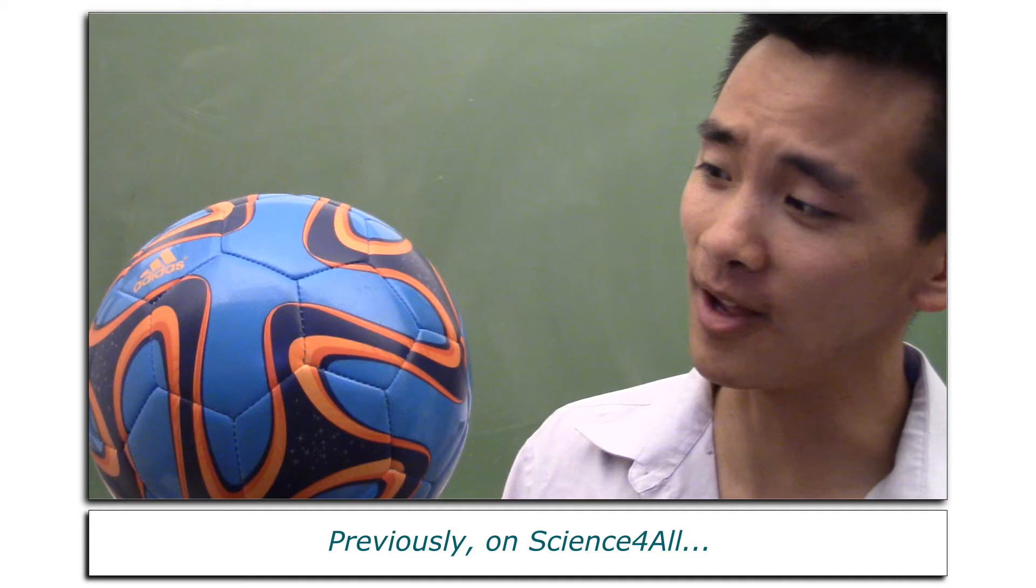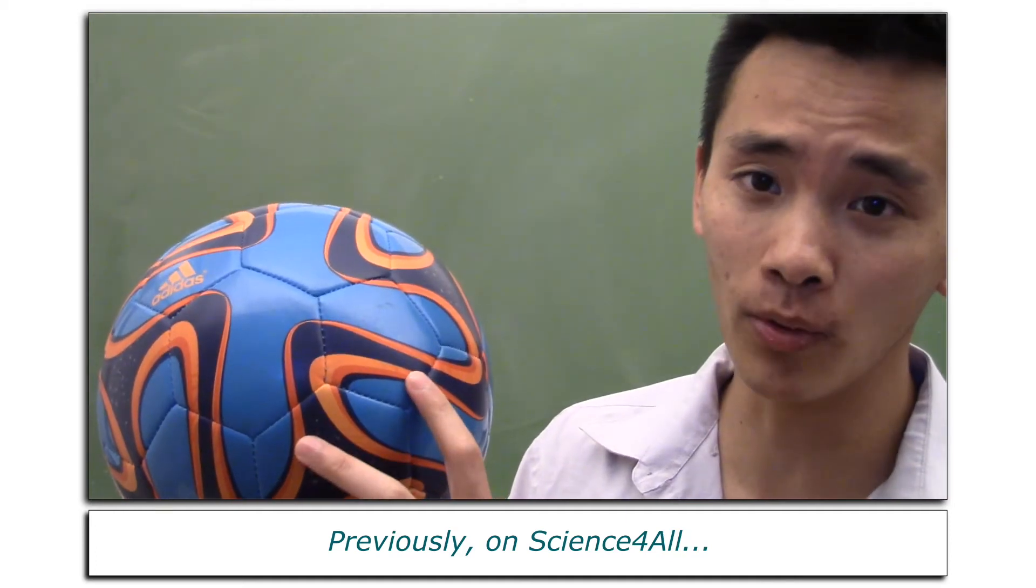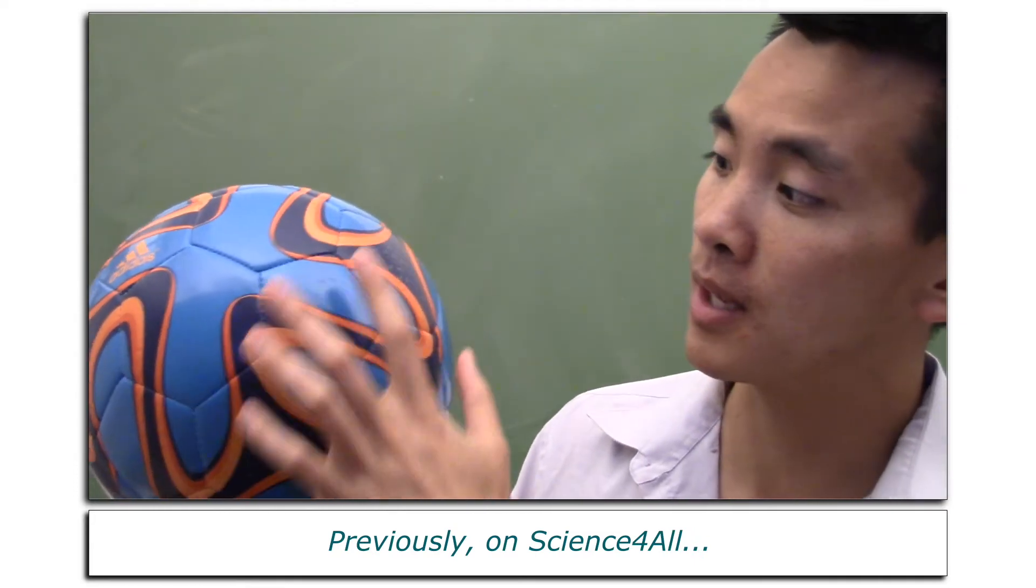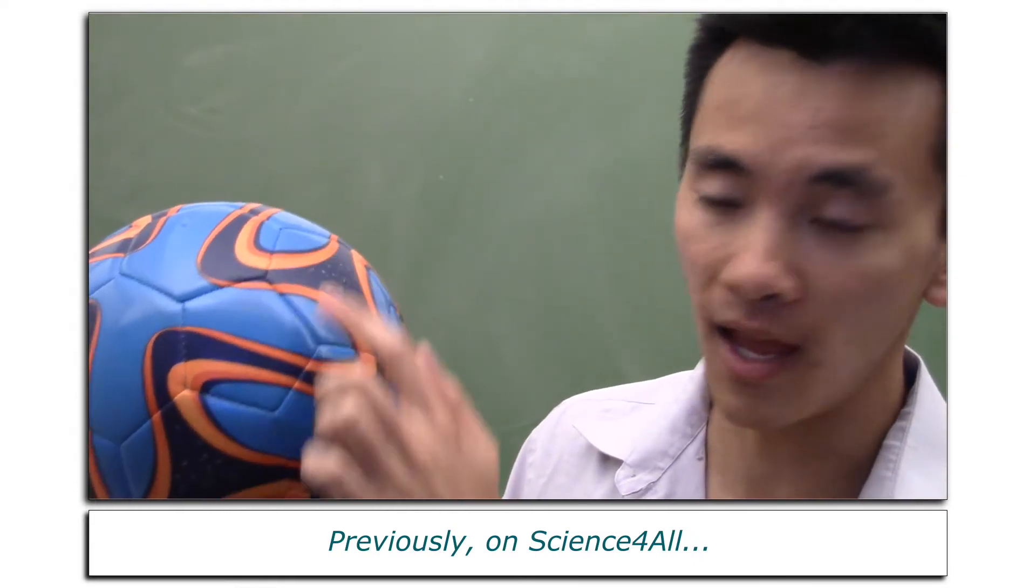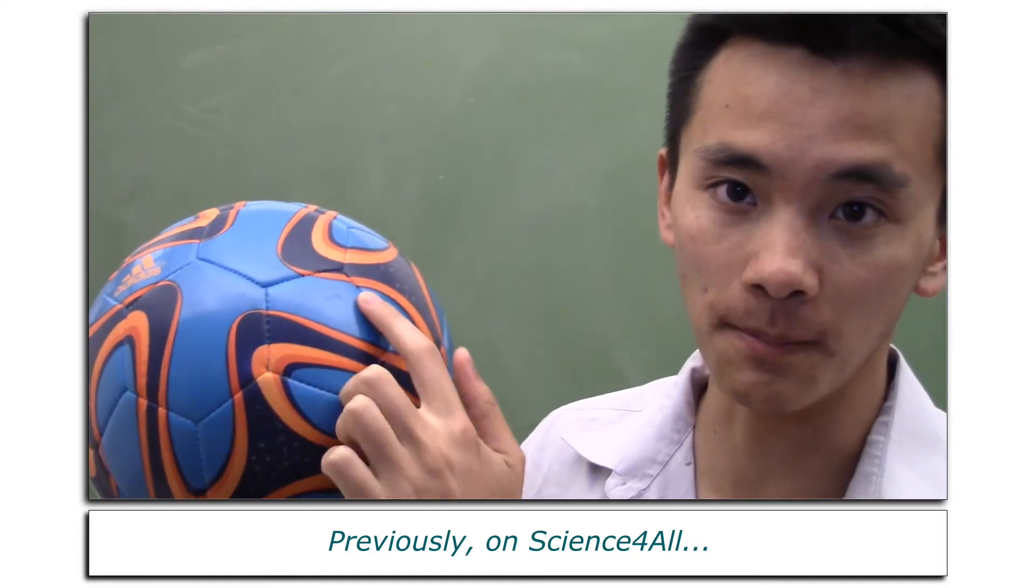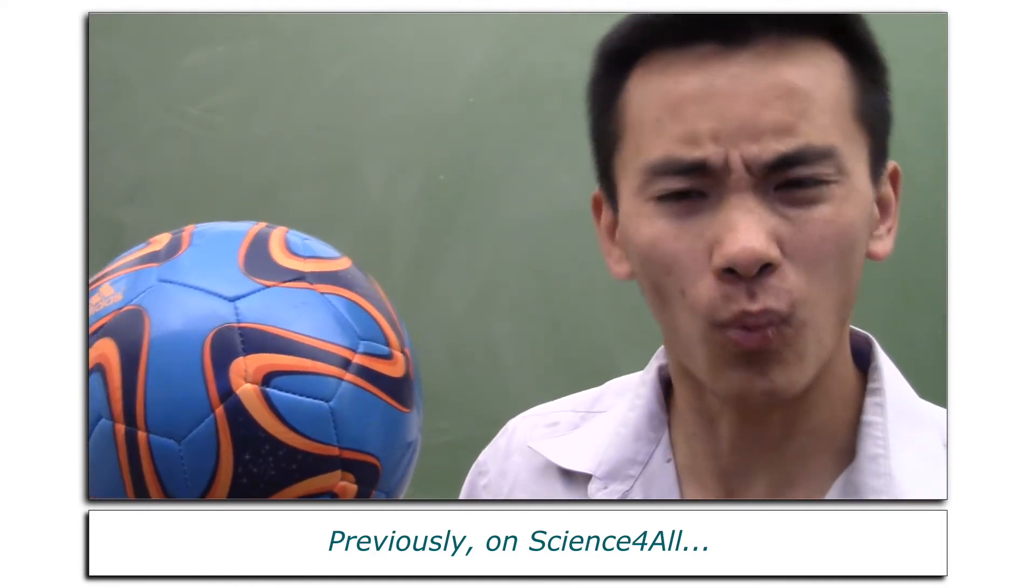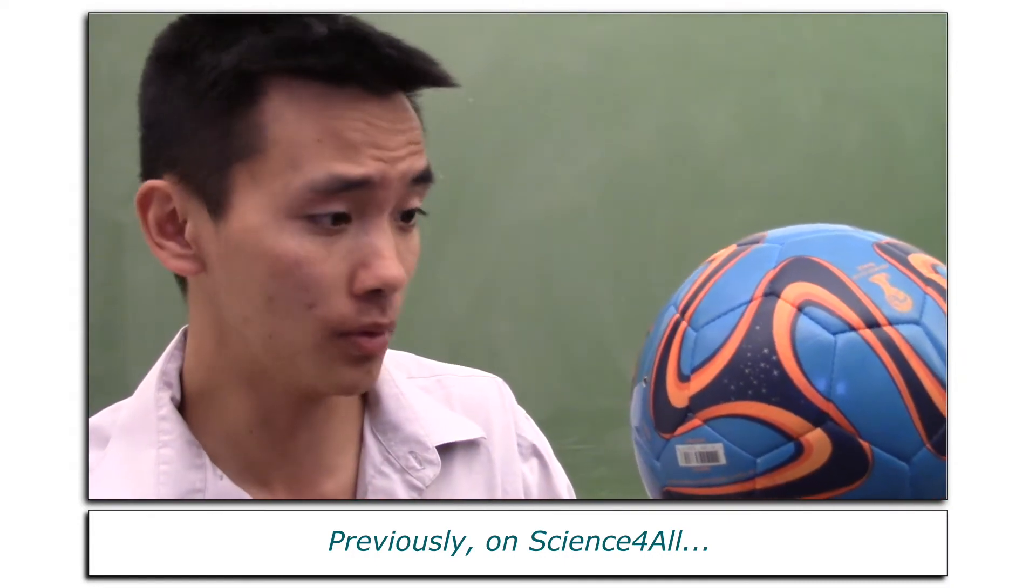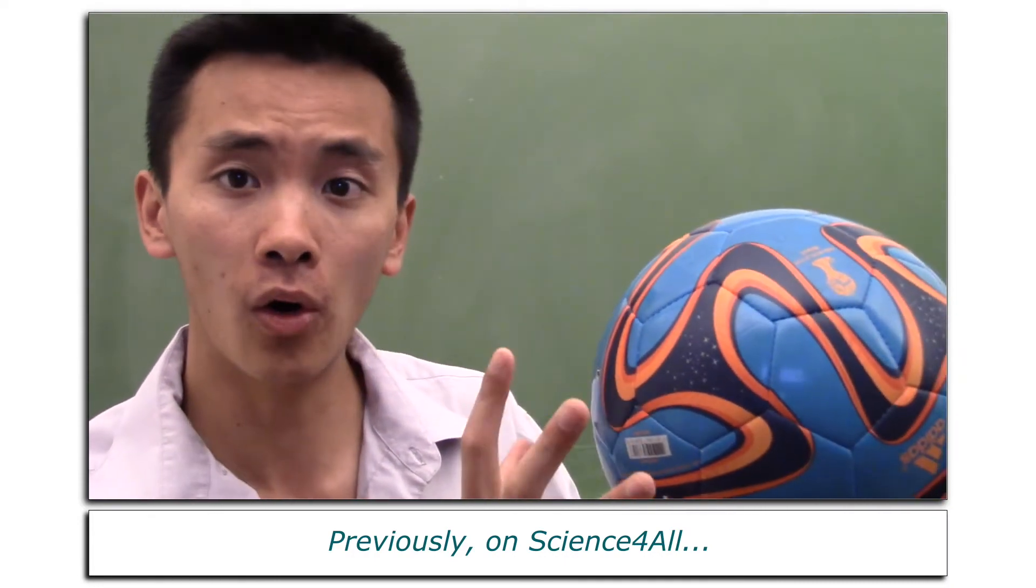Previously on Science4All: These balls are made of hexagons and pentagons—that means six-sided shapes and five-sided shapes. But why? Could we make a better design of soccer balls? Could we make them more round?